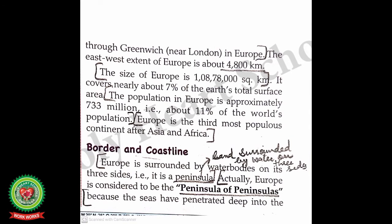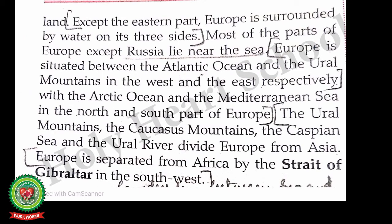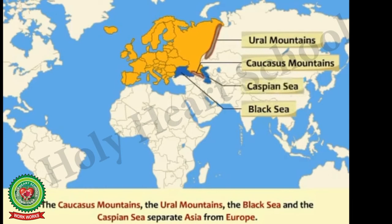Let us continue with the topic of borders and coastline. Coastline means the boundary line between land and sea. Europe is surrounded by water bodies on three sides, making it a peninsula — land surrounded by water on three sides. Europe is considered the 'peninsula of peninsulas' because the seas have penetrated deep into the land. Europe is situated between the Atlantic Ocean and the Ural Mountains to the west and east respectively, and between the Arctic Ocean and the Mediterranean Sea to the north and south. The Ural Mountains, Caucasus Mountains, Caspian Sea, and Ural River separate Asia from Europe.